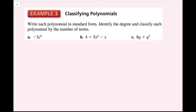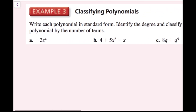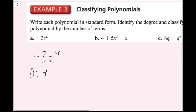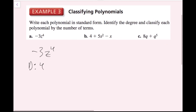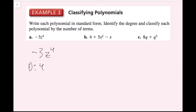For example 3, we write each polynomial in standard form, identify the degree, and classify by number of terms. For part a, there's only one term: negative 3z to the fourth power — already in standard form. The degree is 4 since z is taken to the fourth power. With only one term, this is a monomial.